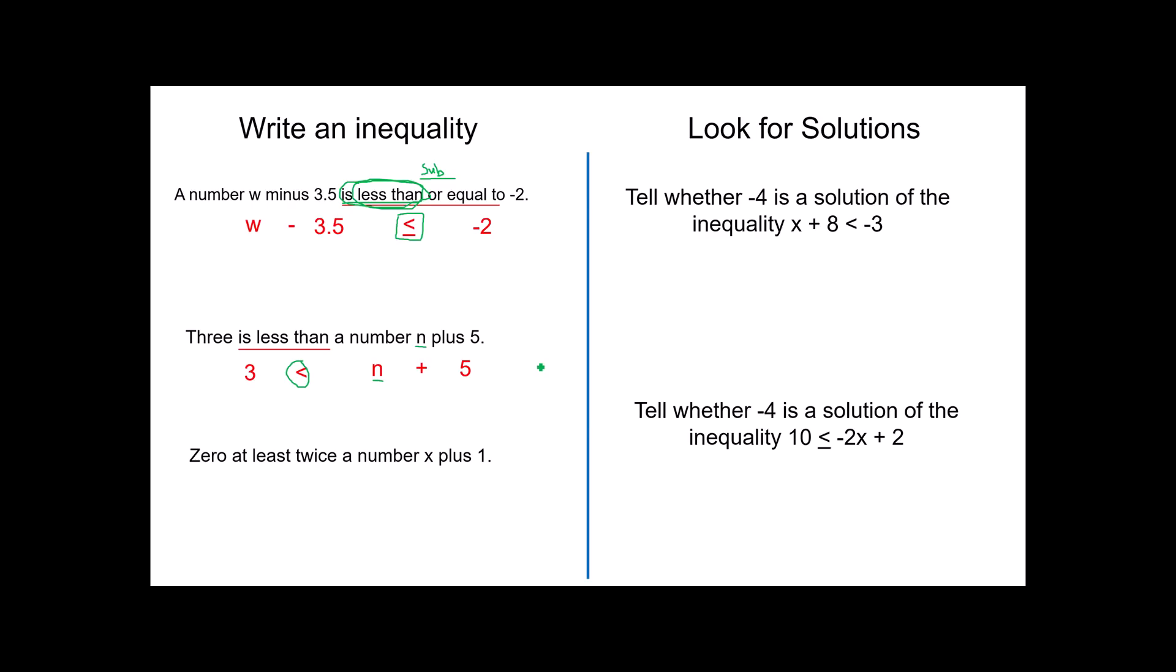One more. 0 is at least, there's a little typo for you, is at least, what does that mean? Is at least. Is at least means this much or more. That's greater than. Twice the number X plus 1. There you go.